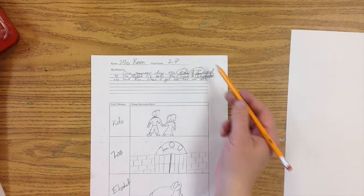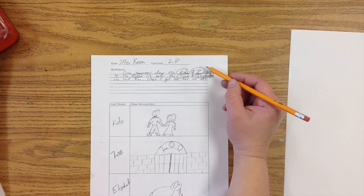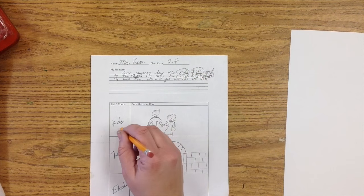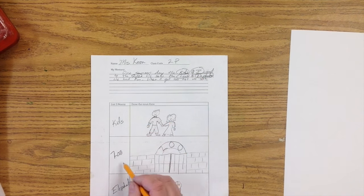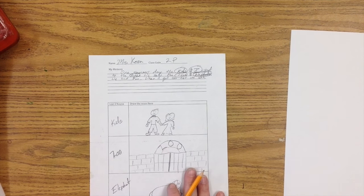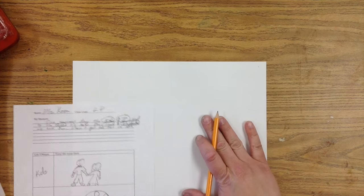Now you might have more than five nouns, but you need to have at least three. So I have three nouns here. I have the kids, so I drew the kids, the zoo, so I drew the zoo entrance, and an elephant. And those are the three things that I am going to draw on my final piece of paper.